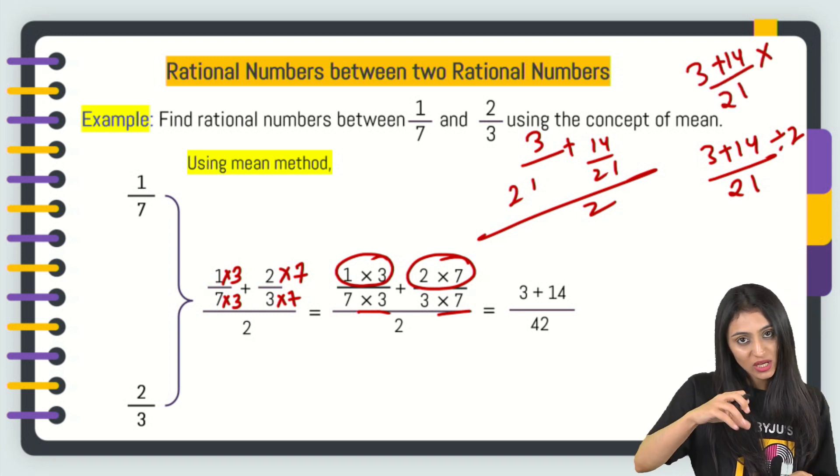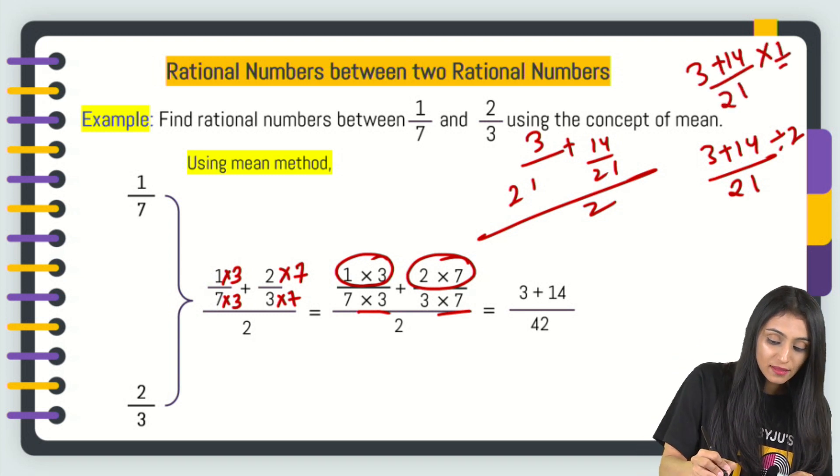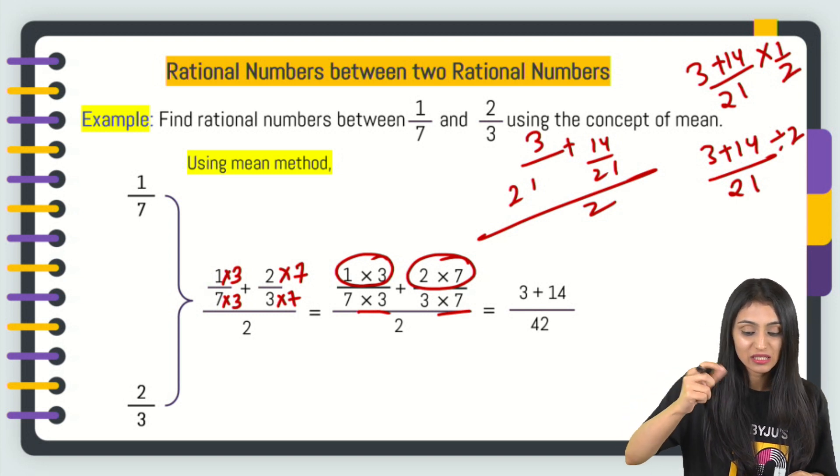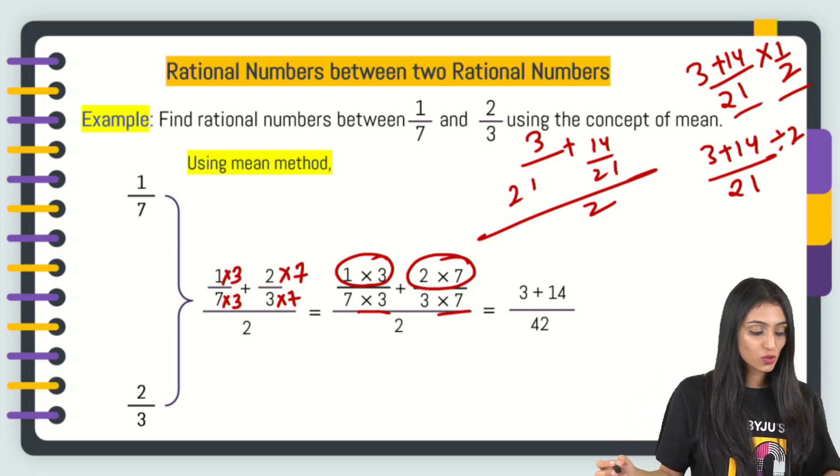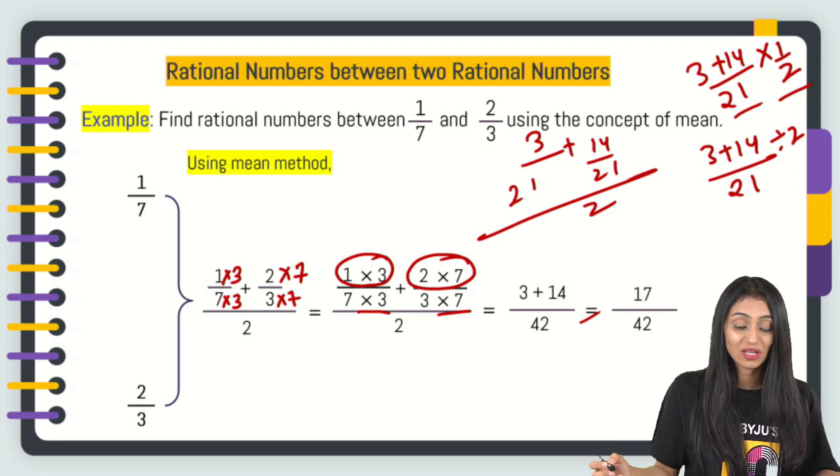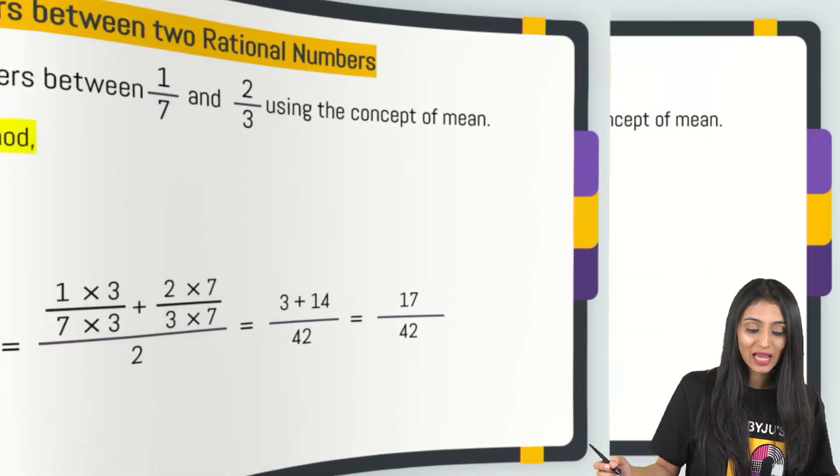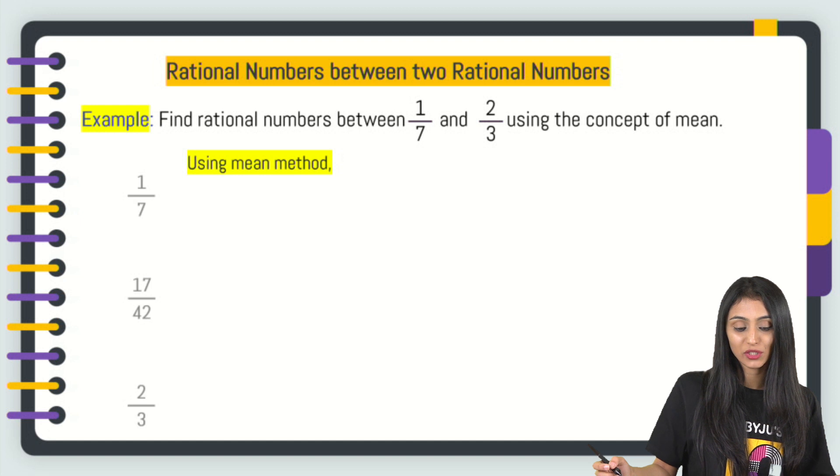when we change the division symbol to multiplication, the number after that gets reciprocal, that is flipped. So, 21 times 2 is going to be 42. That's how we are getting this. So, we get 17 by 42 will lie between 1 by 7 and 2 by 3.